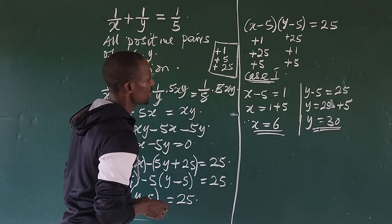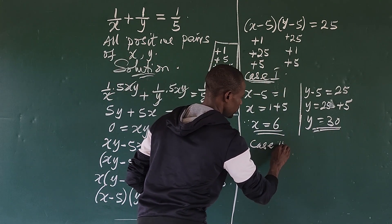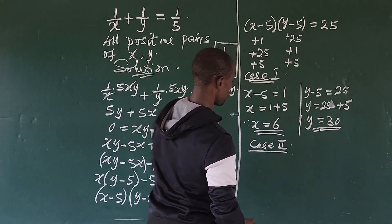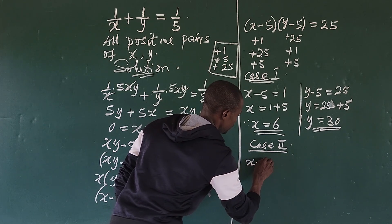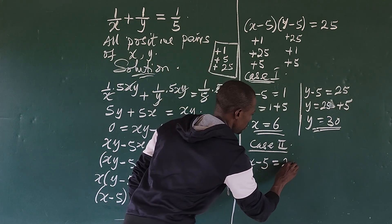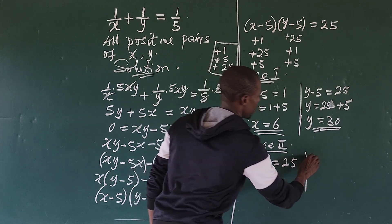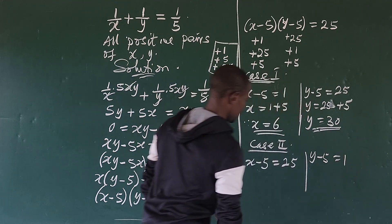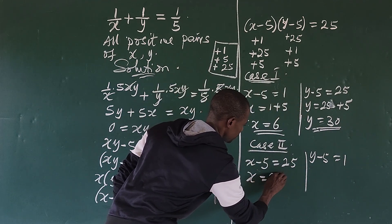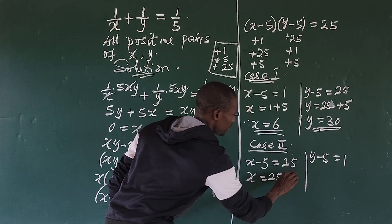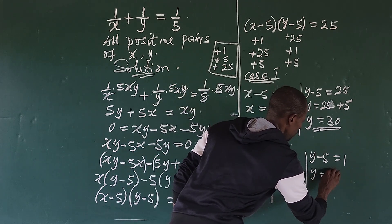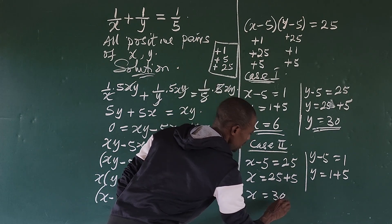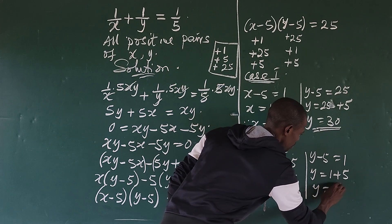For Case 2: (x minus 5) equals 25 and (y minus 5) equals 1. So x equals 25 plus 5, giving x equals 30, and y equals 1 plus 5, giving y equals 6.